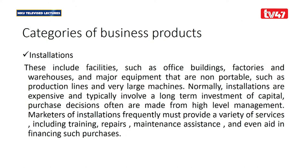There are also categories of business products, organized into seven categories. Number one is installations — facilities, office buildings, factories, warehouses, and major non-portable equipment in an institution. They are there to enhance the production of a given organization. Examples include generators used in different industries — they are fully fixed in a building, not portable, and are there to enhance production.